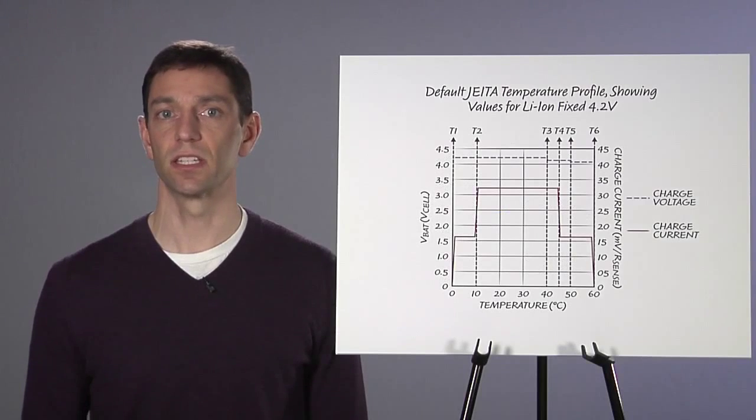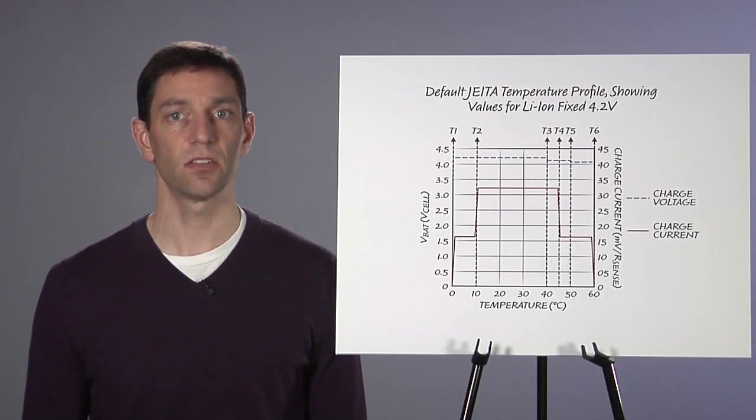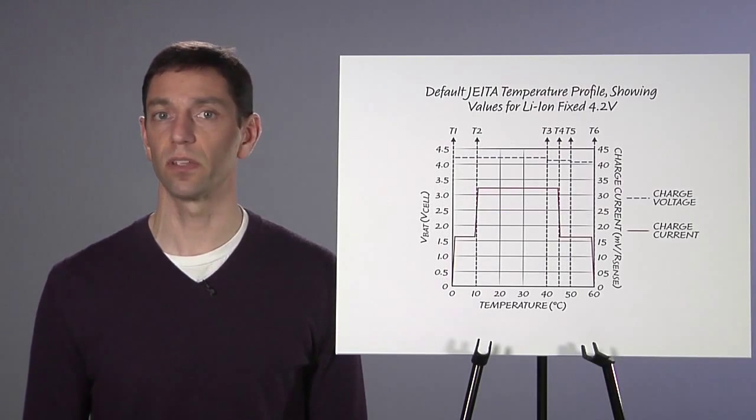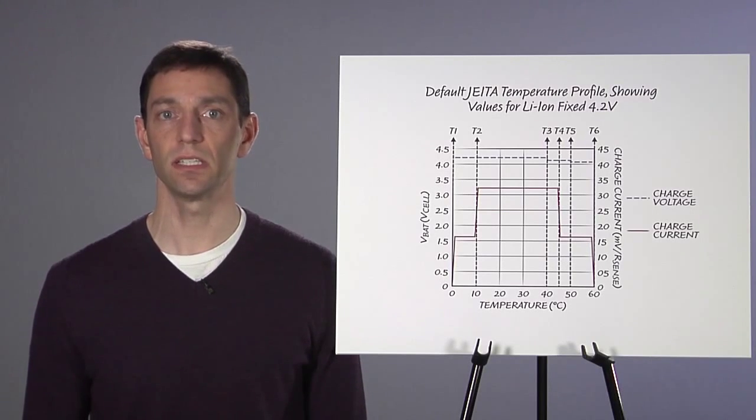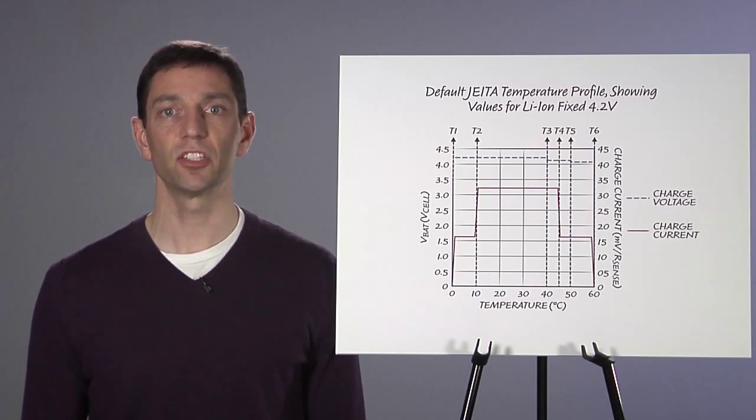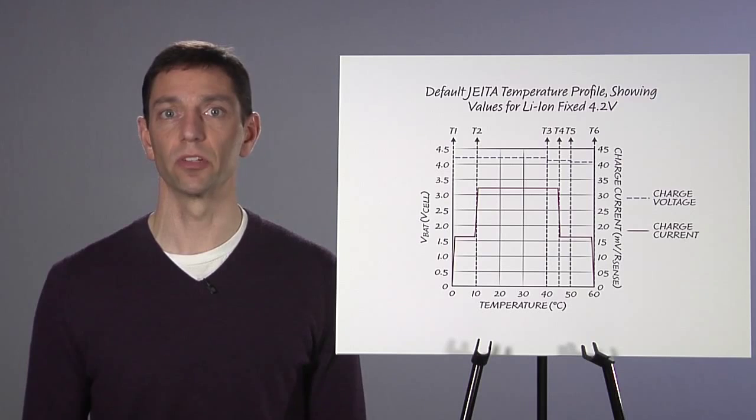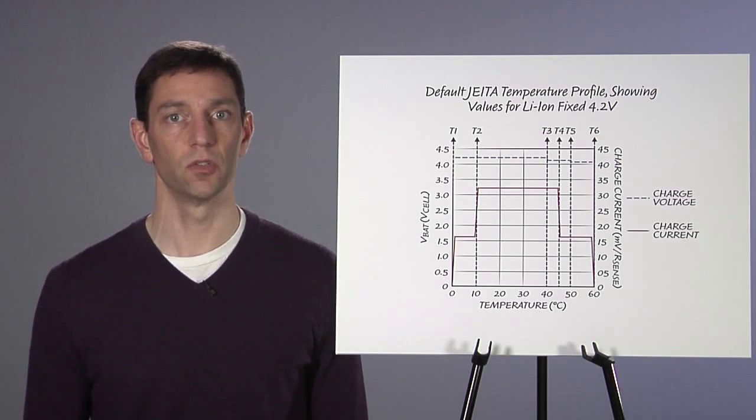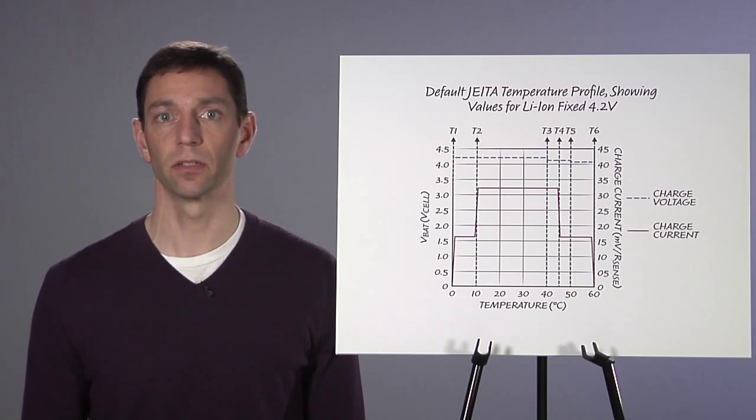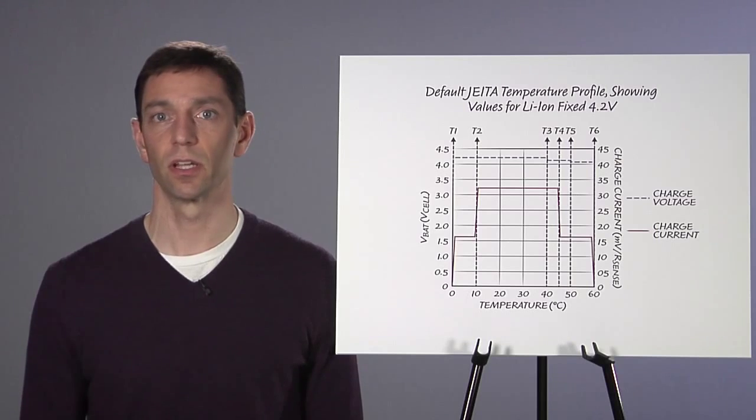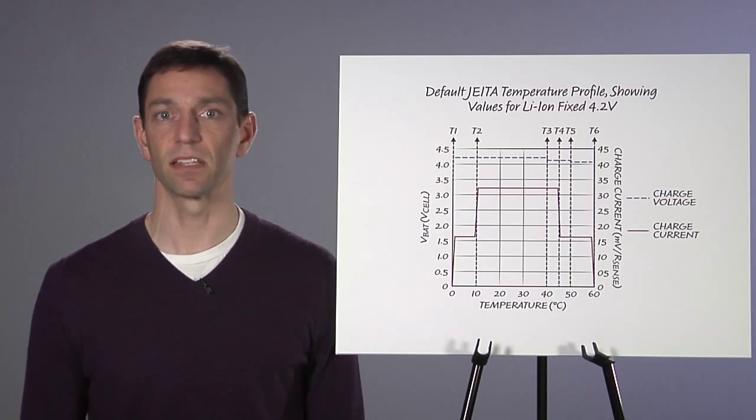In order to adjust the temperature set points, it is necessary to communicate with the LTC4015 using its I2C serial port. In addition to being able to adjust charge parameters, this same serial port is used to read information from the Coulomb counter, monitor system parameters, program parameter limits for the alert system, and read status information.